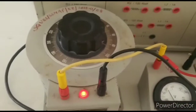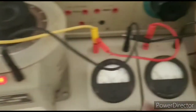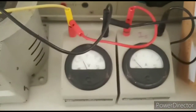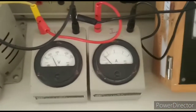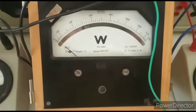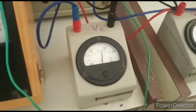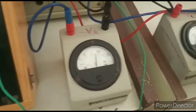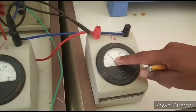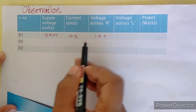Second reading: supply voltage 230 V, current 0.4 A, wattmeter shows 35 W, voltage across resistance 175 V, and voltage across inductor 110 V.